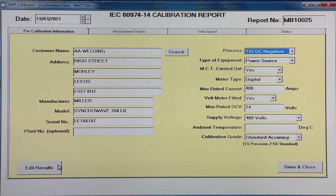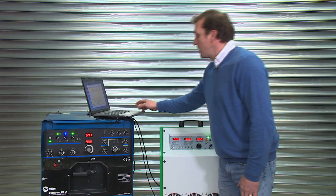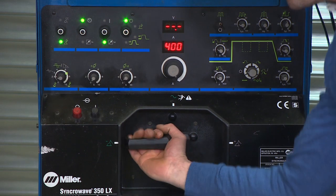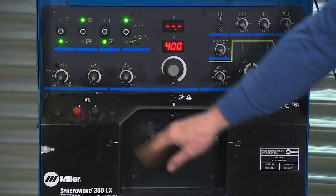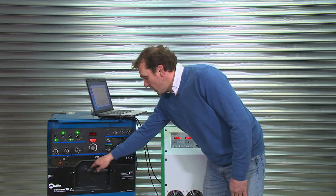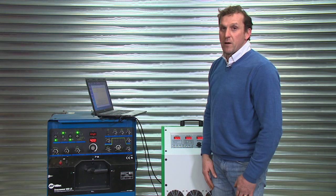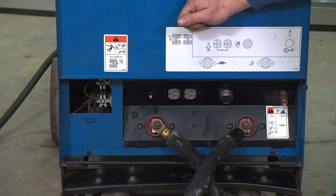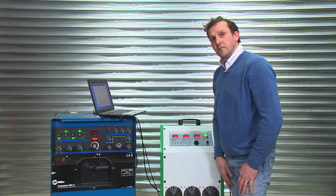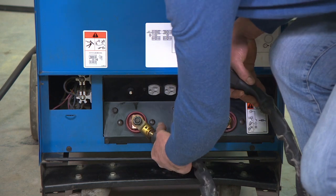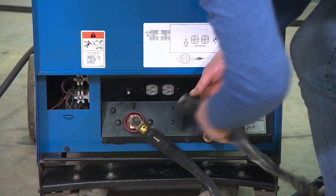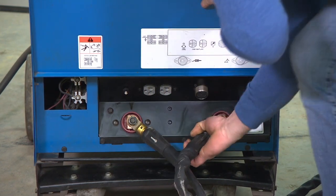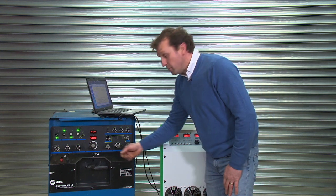We've done TIG DC positive, we're going to now do DC TIG negative. Everything else is the same, including the temperature. And then what we need to do is reverse the polarity to DC negative. A traditional transformer machine will work on a polarity switch, more modern inverter, you may have to go into background menus to reverse the polarity to carry out the calibration. Because we've changed polarity, we will have to reverse the cables to ensure that we don't get the polarities the wrong way round.